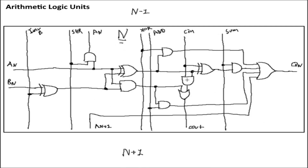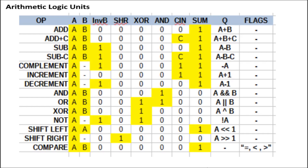Simply by taking an adder circuit and modifying it a little bit, we can create a pretty powerful ALU that can do all sorts of things. This isn't the definitive way to make an ALU — there are many ways with many different functions and flags. I did compile a table of all the functions this ALU can perform, as well as what the state of their control bits needs to be. I've counted 14 functions: add, add plus carry, subtract, subtract plus carry, complement, increment, decrement, logic operations, shift operations, and comparison. The table shows what the inputs need to be to create that output, and what the Q output and flags will be for each operation.